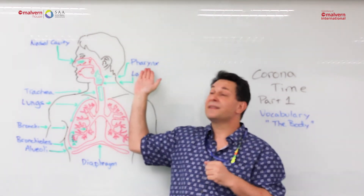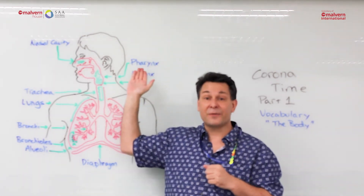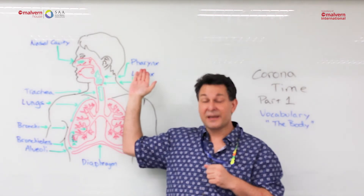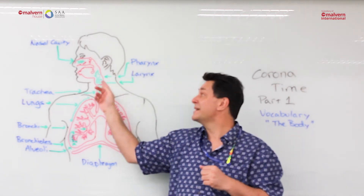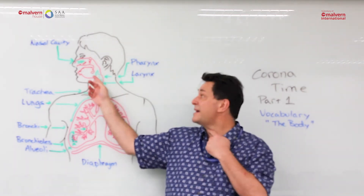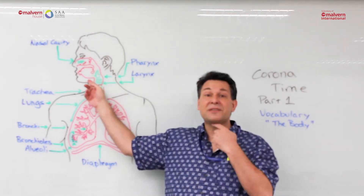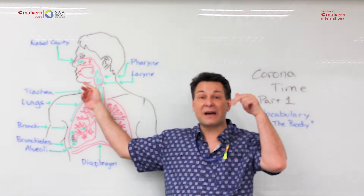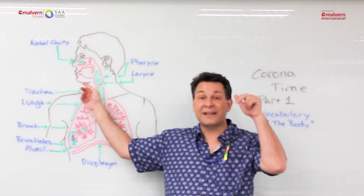Then we have what's called the pharynx. The pharynx is that space behind that little thing in the back of your mouth that goes ding ding ding.